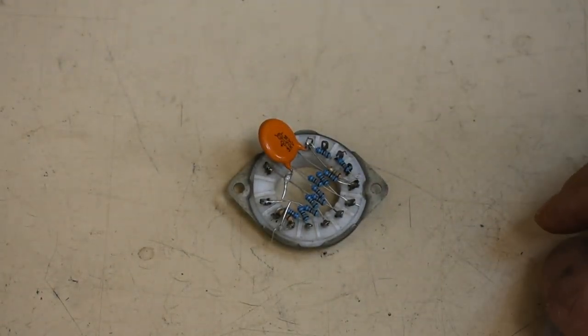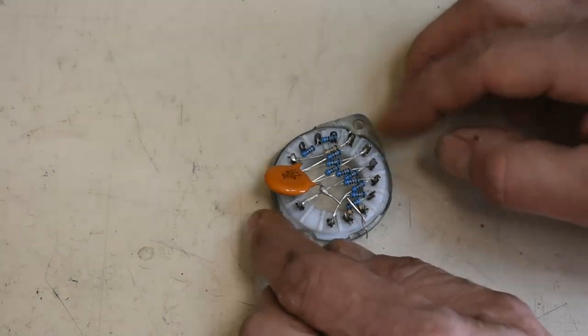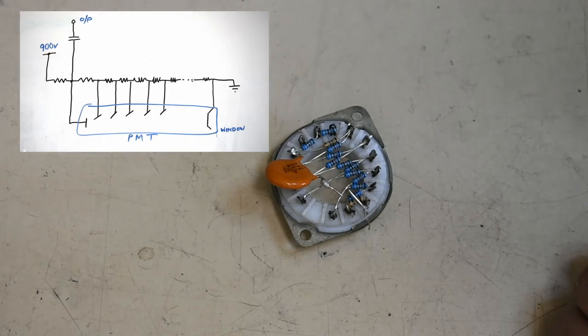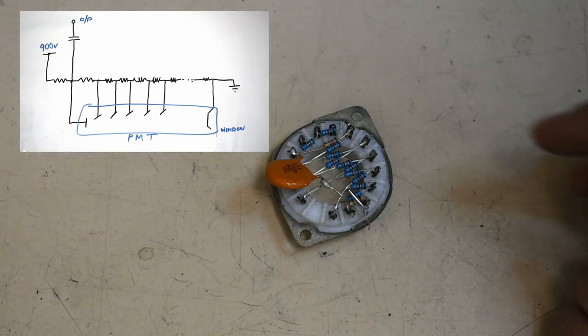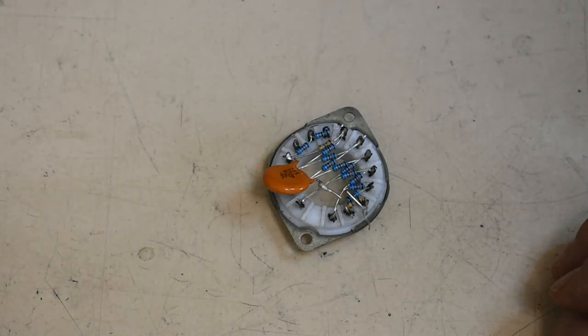The various voltages required for each dinoid are achieved by just a simple potential divider from the anode to the cathode, with each dinoid being teed off from part of the divider. So it's quite straightforward.